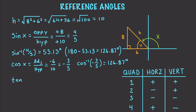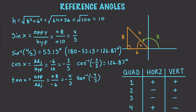Also, tangent. This is opposite over adjacent, which is positive 8 over negative 6, giving us negative 4/3. The inverse tangent of negative 4/3 gives negative 53.13. To make that work, we go negative 53.13 plus 180 to get our final expected result of 126.87 degrees.